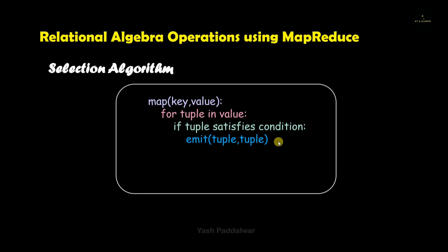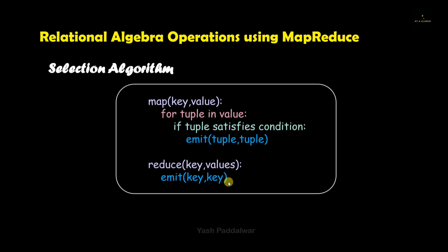Once the Map task is done, control will go to the reducer workers, and the reducer workers will carry out the reduce task. In the selection operation, the reducer worker only emits the key that is associated with those particular selected tuples. That's it — this is the selection algorithm.